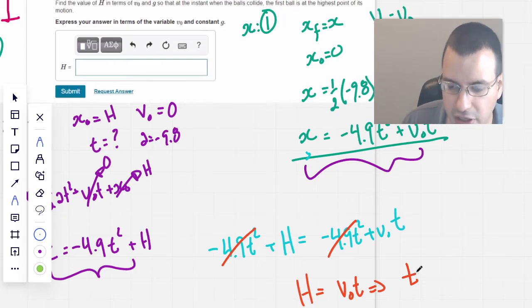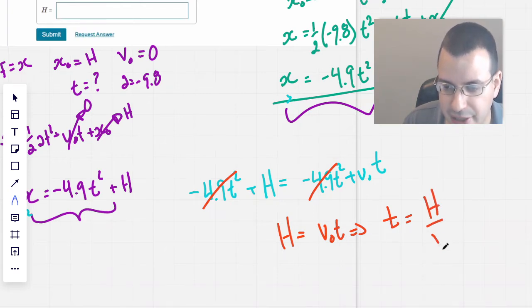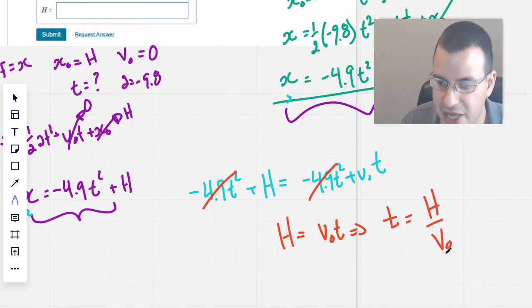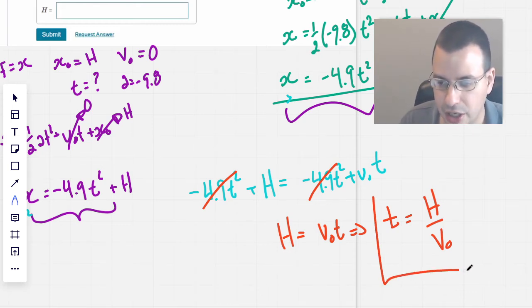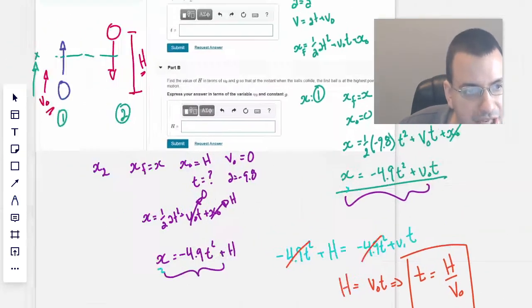Alright, so here we have H equals V0 T. Therefore, the time of collision, that's supposed to be a T. Lowercase t, that's why it's got a little tail on the bottom. Is the height divided by V0. So basically if you throw it faster, it's going to collide quicker. And if you drop it from a higher position, it'll collide later. Okay, so that's the first part.